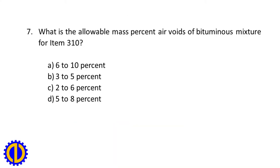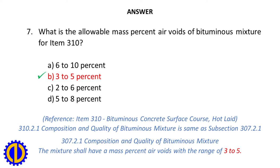Question 7. What is the allowable mass percent air voids of bituminous mixture for Item 310? A. 6-10%. B. 3-5%. C. 2-6%. D. 5-8%. Answer: B. 3-5%. Item 310, Bituminous Concrete Surface Course, Hot Laid. Composition and quality of bituminous mixture is same as subsection 307.2.1. The mixture shall have a mass percent air voids within the range of 3 to 5.